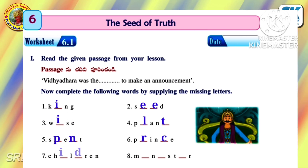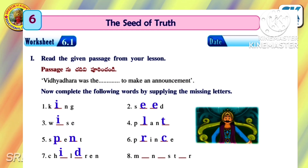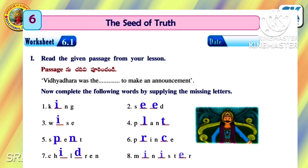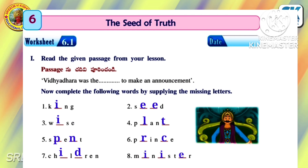Sixth one: P-R-I-N-C-E, Prince. Seventh one: C-H-I-L-D-R-E-N, Children. Eighth one: M-I-N-I-S-T-E-R, Minister.